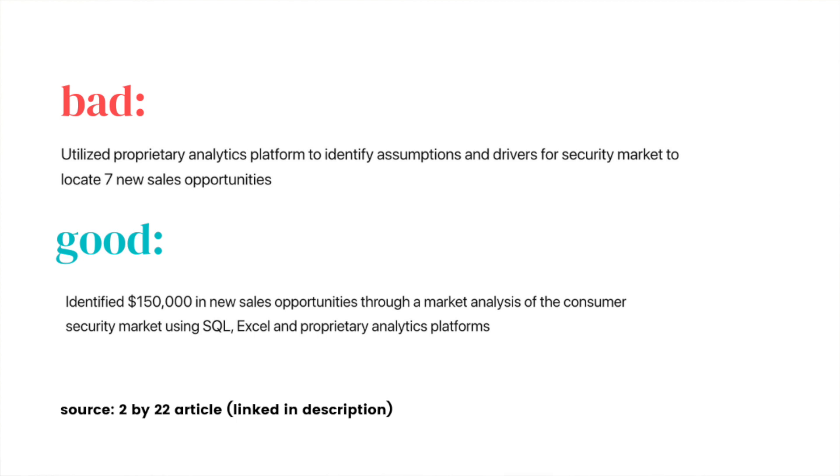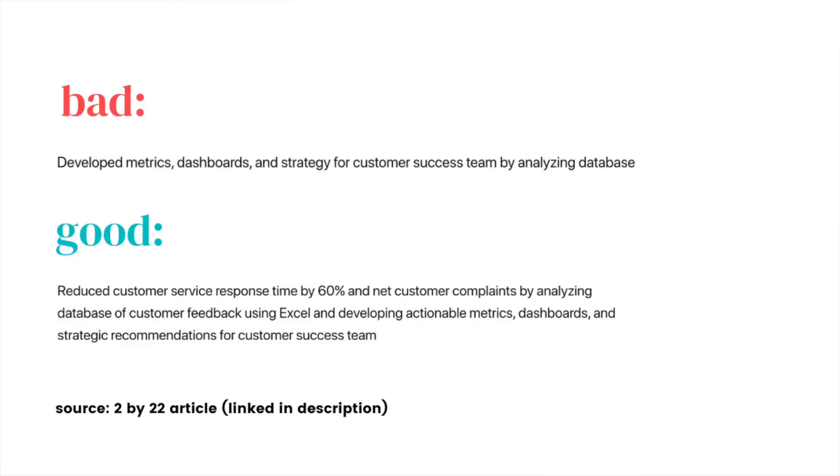There are two frameworks for writing good bullet points. The first is called "Impact-What": start with the impact and outcome you achieved, then explain what you did — the opposite of how most people write it. Ideally include actual numbers — you can estimate, or check with a data scientist or dashboard. The second framework is "Why-First": explain what you did, how you did it, and why you did it. These are the two frameworks I'm going to try to use on my own resume.